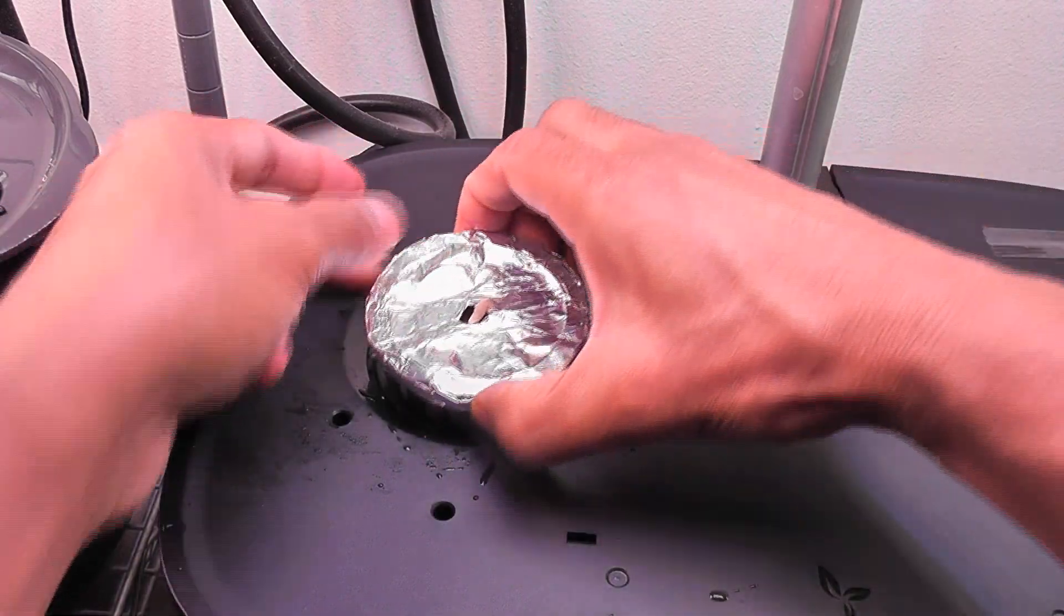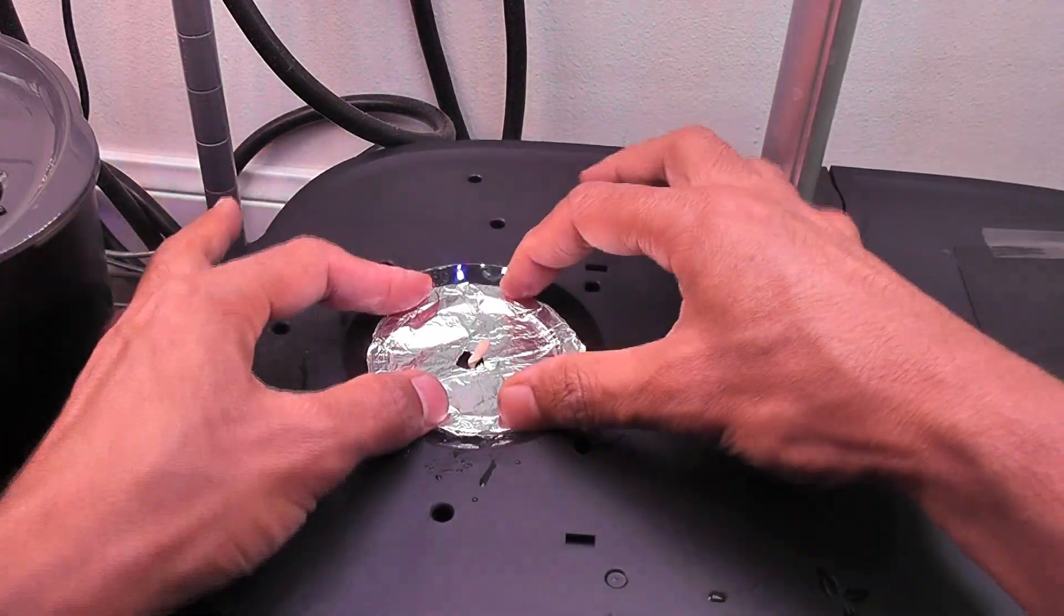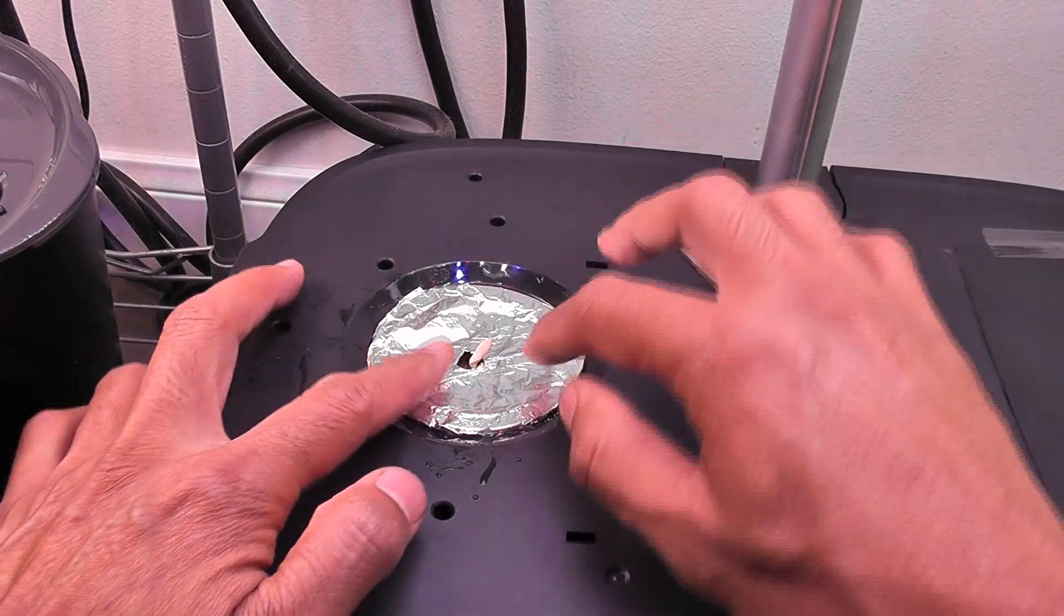That's it. Now place the pod back into the grow deck. All right, now the seedling is well positioned.